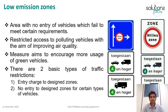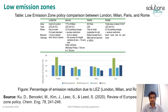In the Netherlands, low emission zones are present in 15 Dutch municipalities including major cities such as Amsterdam and Utrecht. The rules usually only apply to trucks and coaches, and sometimes also to diesel-powered passenger cars and vans. Road signs indicate which vehicles are affected. There are two basic types of traffic restrictions: the first is an entry charge to designated zones applied to highly polluting vehicles, and the second is a no-entry restriction to designated zones for certain types of vehicles. A table in this slide provides a summary of low emission zone policies in major European cities such as London, Paris, Milan and Rome.